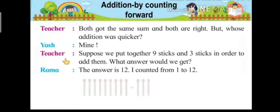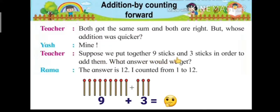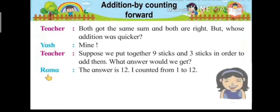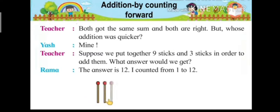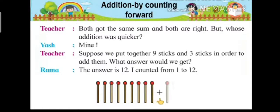The teacher says, suppose we put together nine sticks and three sticks in order to add them. What answer would we get? If we add nine sticks with three sticks, what answer will we get? Rama says the answer is twelve. I counted from one to twelve: one, two, three, four, five, six, seven, eight, nine, ten, eleven, twelve. Here Rama counted serially from one.